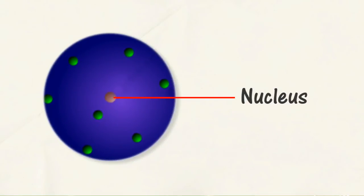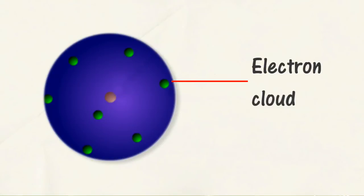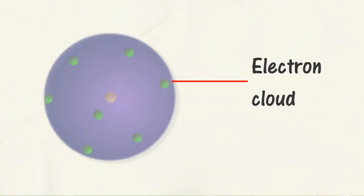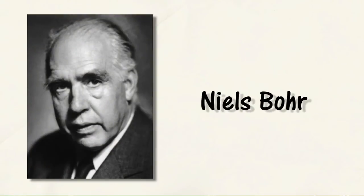The nucleus contains positively charged particles known as protons. Electrons are located outside the area, forming a negatively charged cloud. Niels Bohr improved on Rutherford's atomic model.